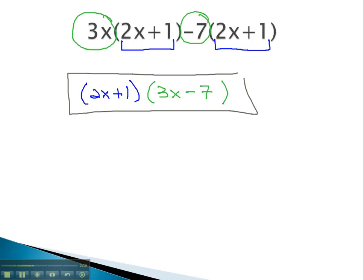Even if the GCF is a binomial, we can still factor it out front, just like our other greatest common factors.